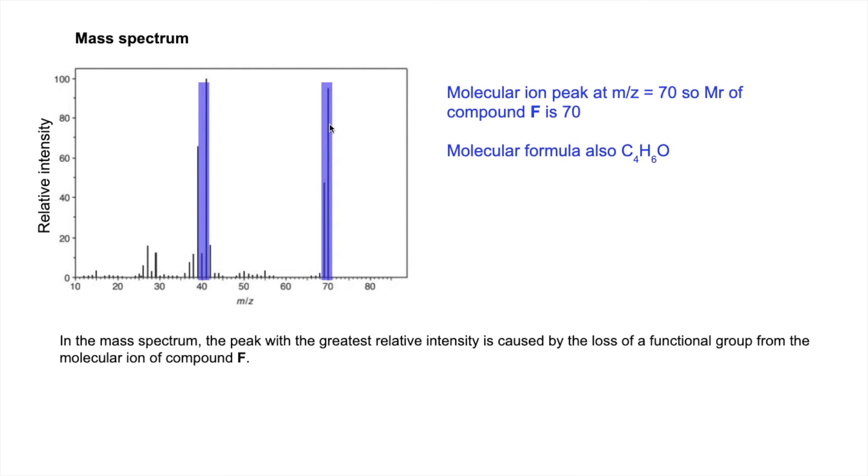So we're interested in what's the drop in mass, and that's going to give us the mass of the functional group. So it's lost 29, going from 70 to 41, and so therefore it's likely to be a CHO. So that adds up to 29: 12 plus 1 plus 16.